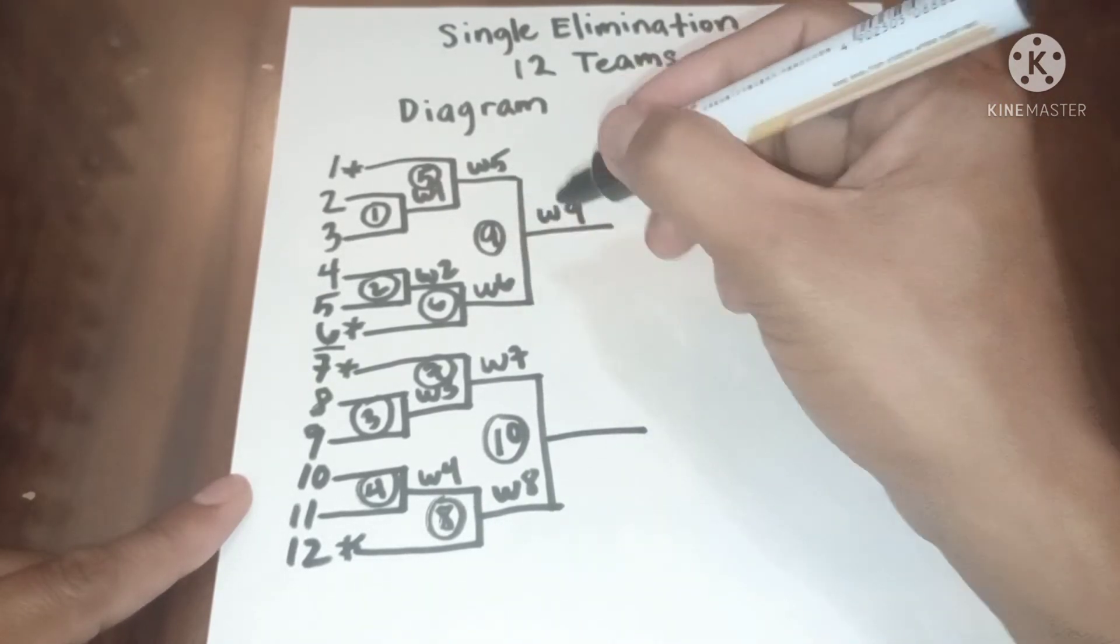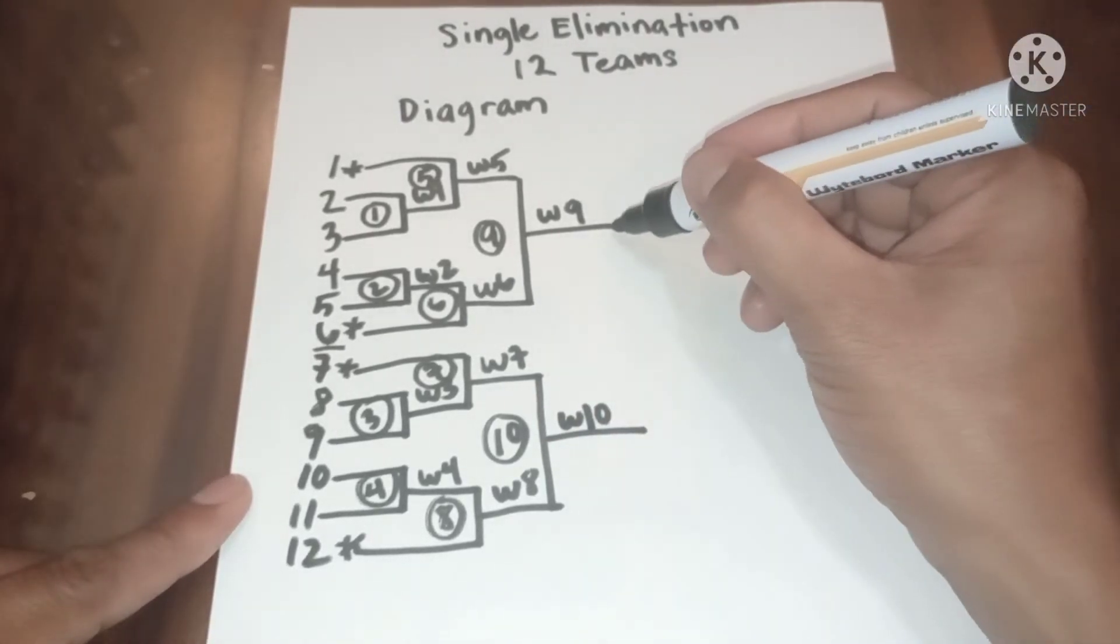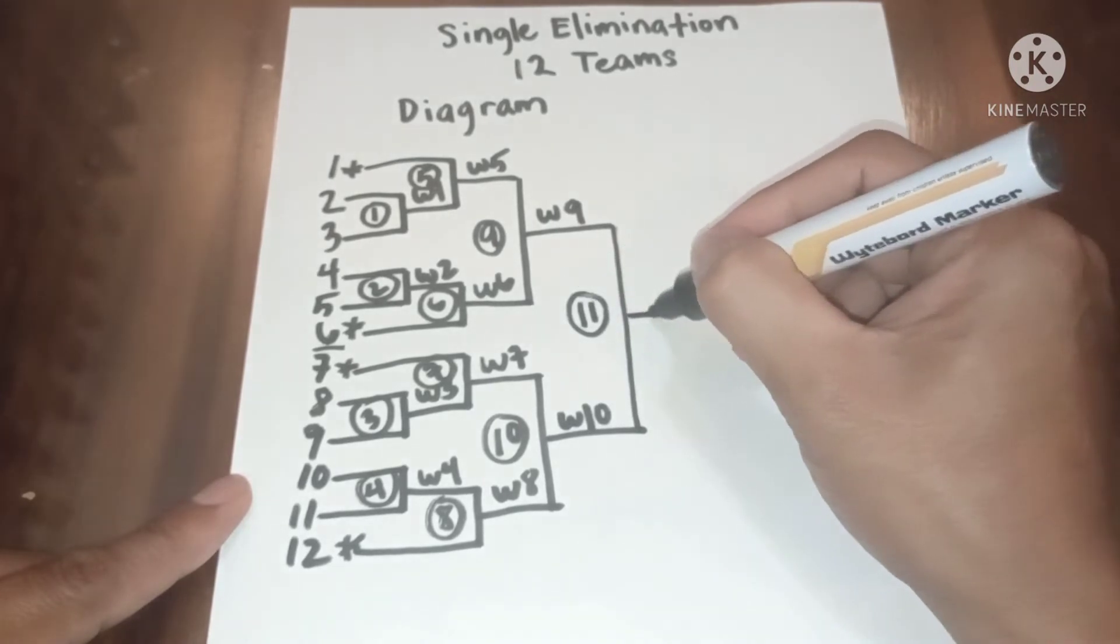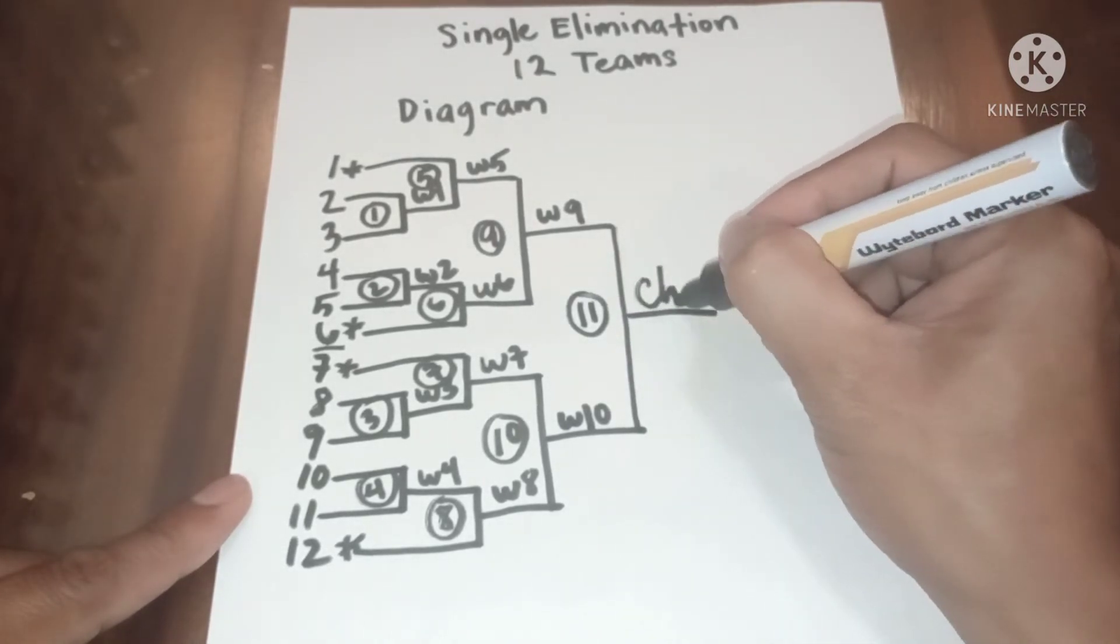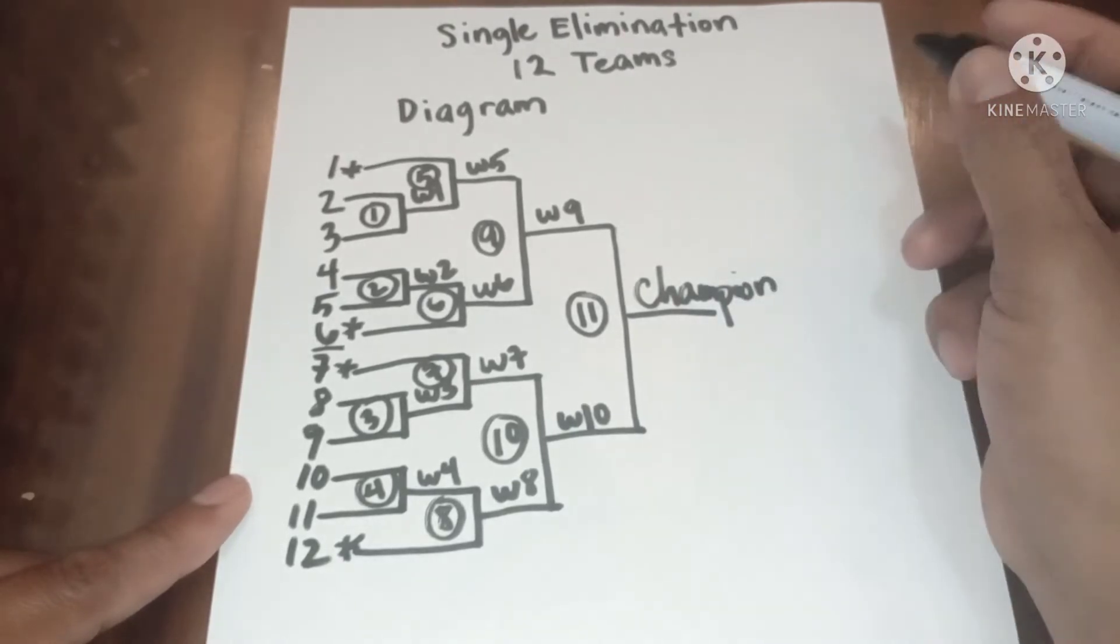Winner 9 from game 9, winner 10 from game 10. Now the final game, game 11. Champion.